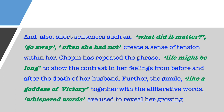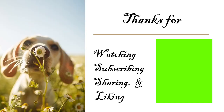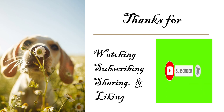Short sentences such as 'What did it matter?' and 'Often she had not' create a sense of tension within her. Chopin has repeated the phrase 'life might be long' to show the contrast in her feelings before and after the death of her husband. The simile 'like a goddess of victory' together with alliterative words and whispered words are used to reveal her growing excitement at freedom. All in all, Chopin has created a great work of art to criticise her own society by using rich language and structural devices to bring out the suppressed feelings and thoughts of underprivileged women. That's it for today — if you found this helpful, don't forget to like, share, and subscribe to this channel. Thanks for watching, and see you with another video soon. Bye bye!